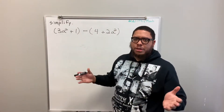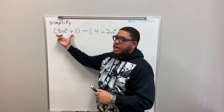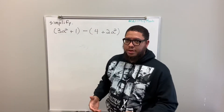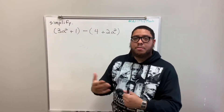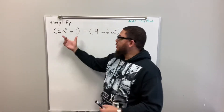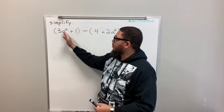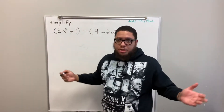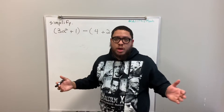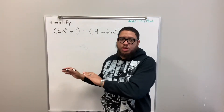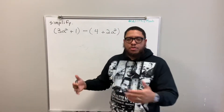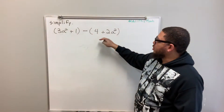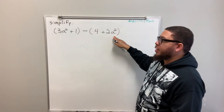Now, when I say quantity, what am I talking about? Anything inside of a set of parentheses is called a quantity, because it's an amount. This is how much is inside these parentheses. 3a squared plus 1 represents an amount of something. Inside of these parentheses, we have a quantity of 4 plus 2a squared.